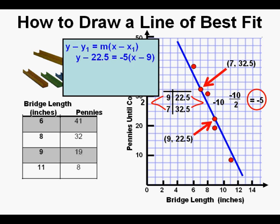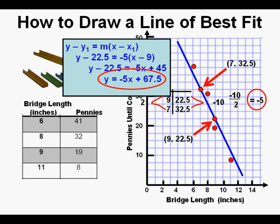And here is the equation with the numbers replaced. Using the distributive property, we have negative 5x plus 45 on the right side of the equation. Then we add 22.5 to both sides of the equation and end up with y equals negative 5x plus 67.5.